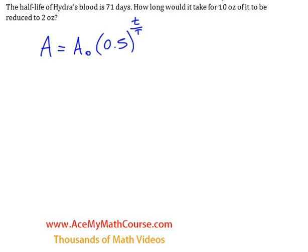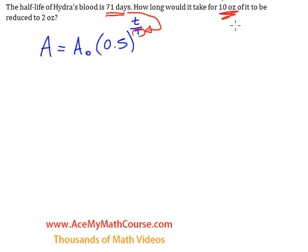Here we have another half-life question that must be solved using logarithms. The half-life of Hydra's blood is 71 days, so right away we know that's going to replace the big T in the equation, because big T represents the half-life. So how long would it take for 10 ounces of the substance — the blood of the Hydra — to be reduced to 2 ounces?